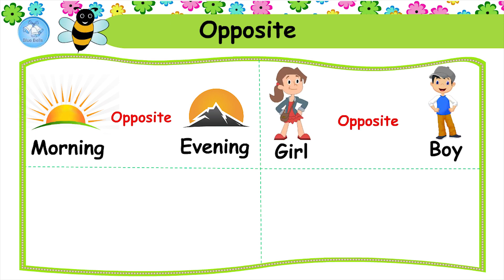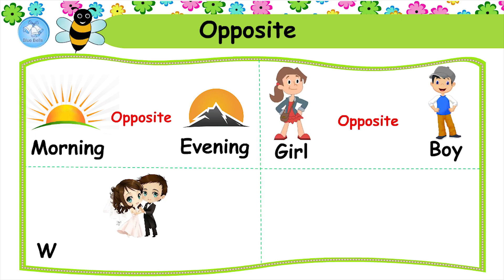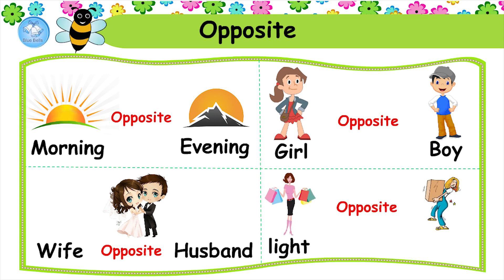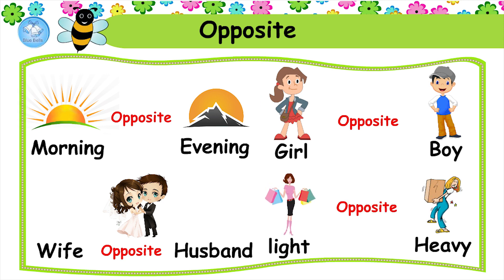Opposites. Sun and moon. Fat and thin. Hot and cold. Cow and ox. Morning and evening. Girl and boy. Wife and husband. Light and heavy.